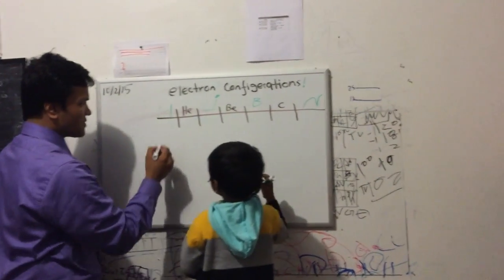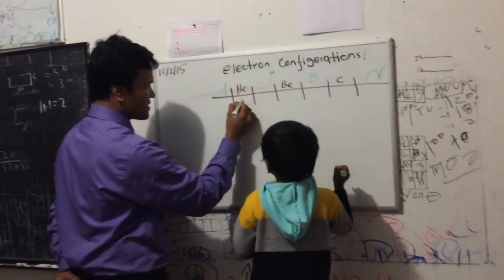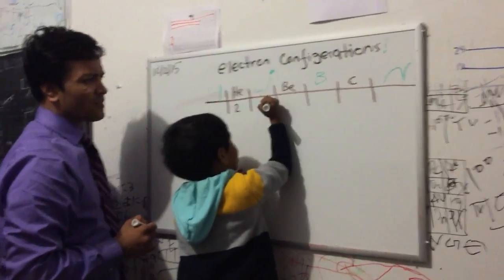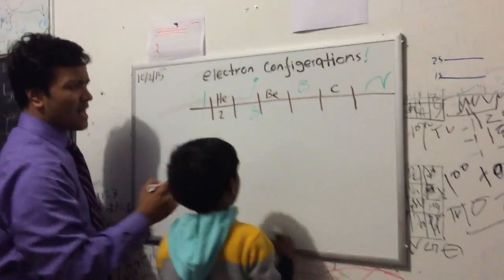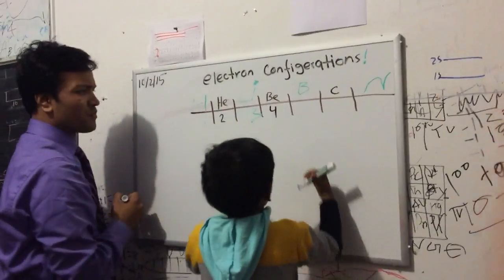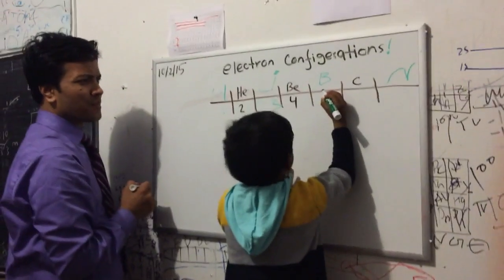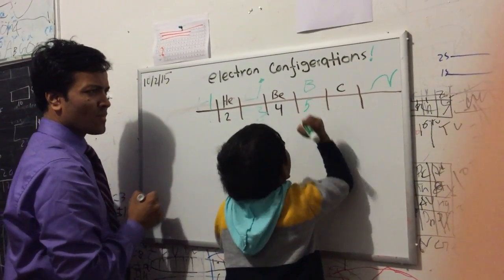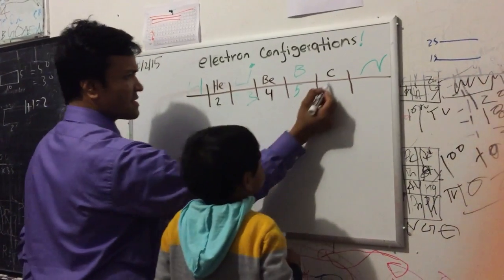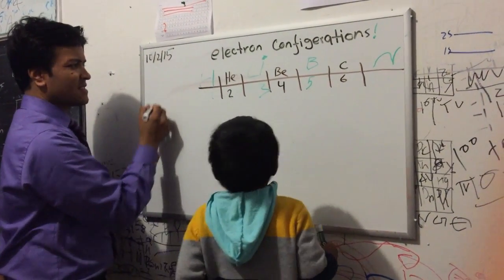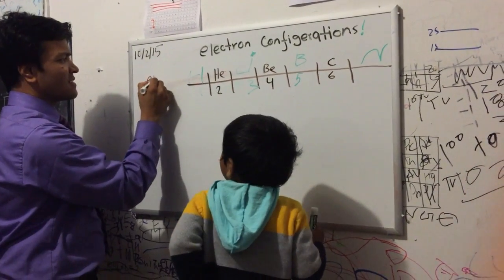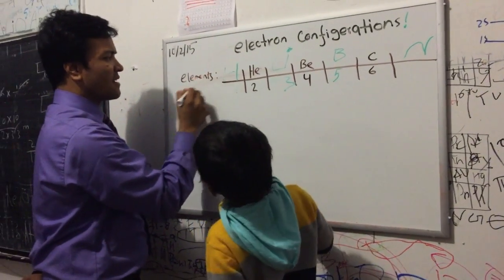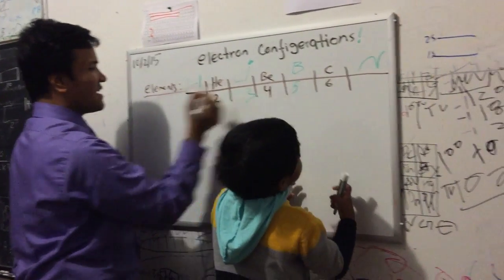Atomic number is one, atomic number is two, atomic number is four, atomic number is five, atomic number is six. I don't know... atomic number is seven.